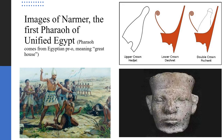Here are some additional images of Menes and his crown. Here's the crown of Upper Egypt, the crown of Lower Egypt, and the double crown worn by later pharaohs to symbolize the uniting of Upper and Lower Egypt. This is thought to be a bust of Menes. Once again, keep in mind that he is likely a mythical figure and a composite of many people.